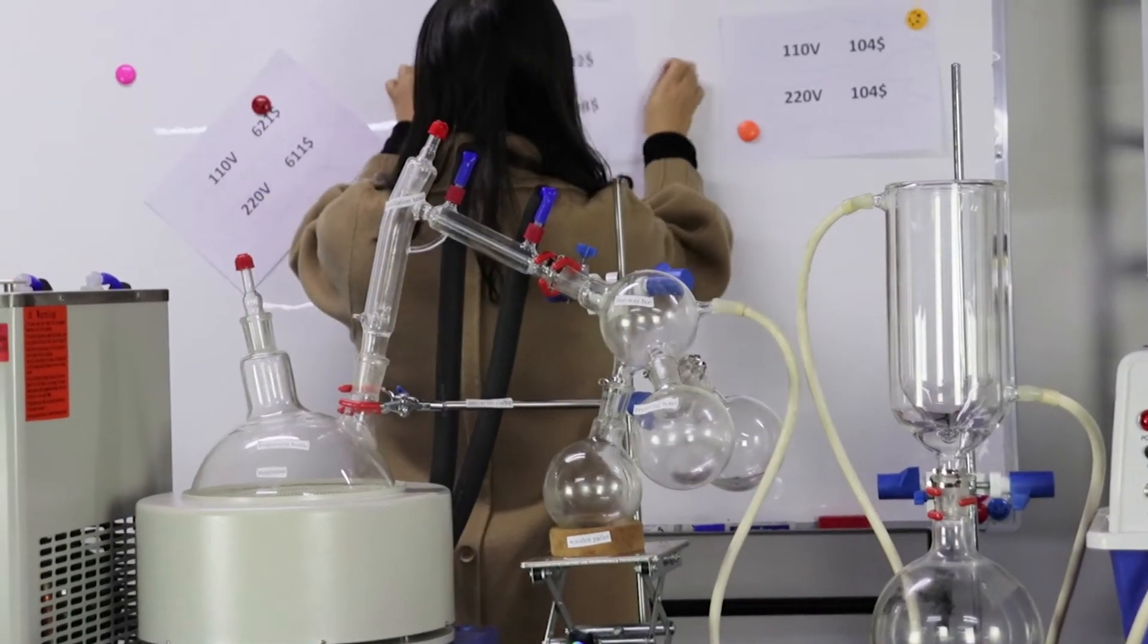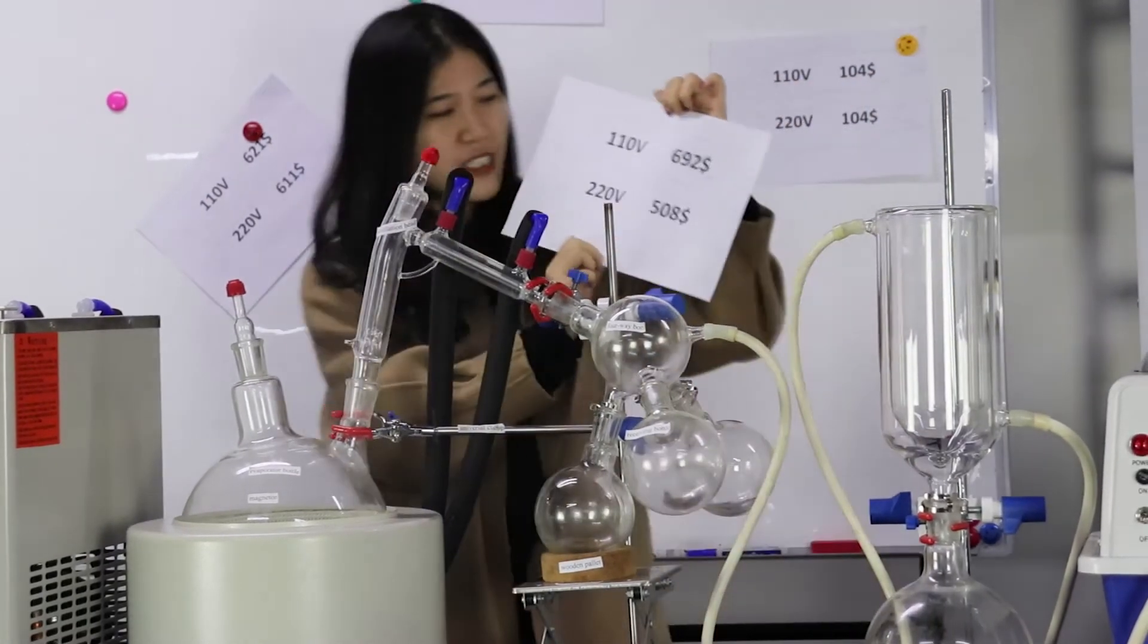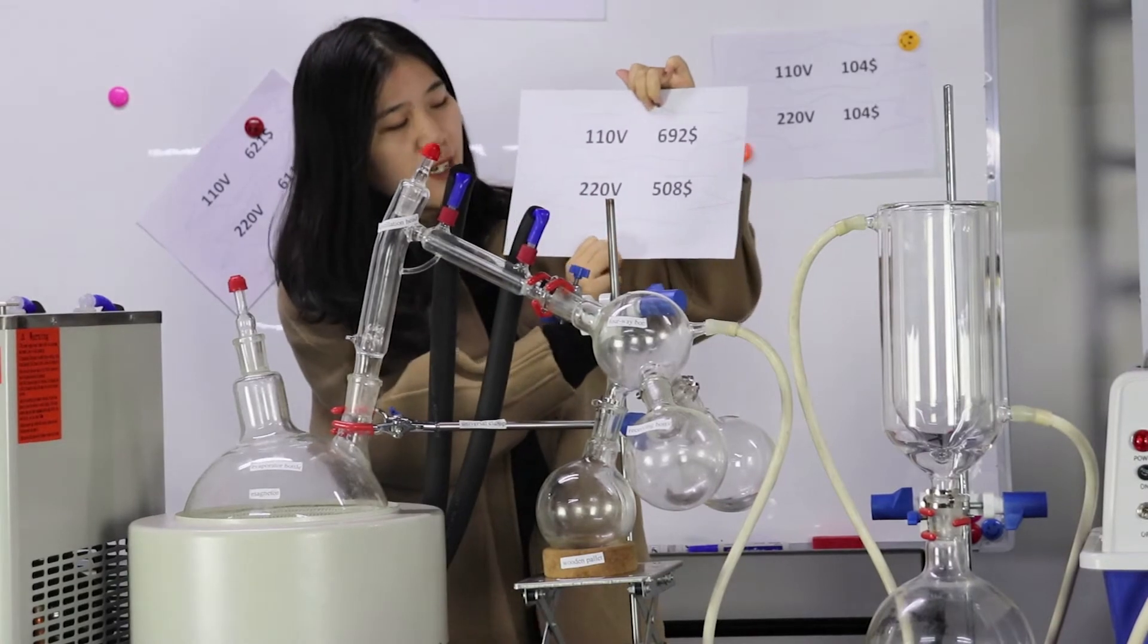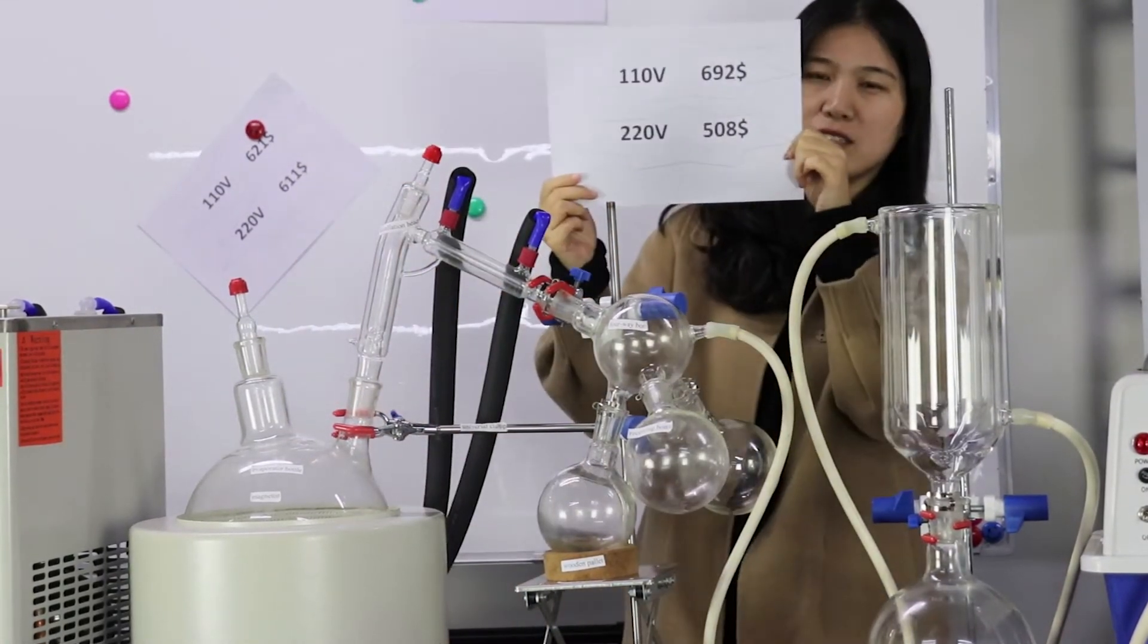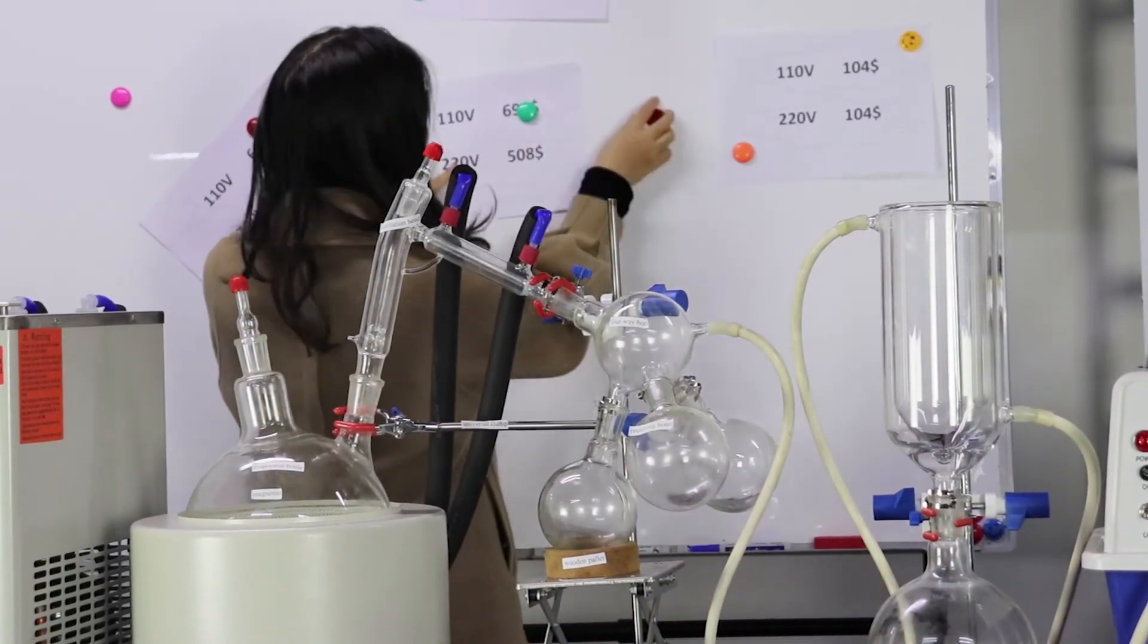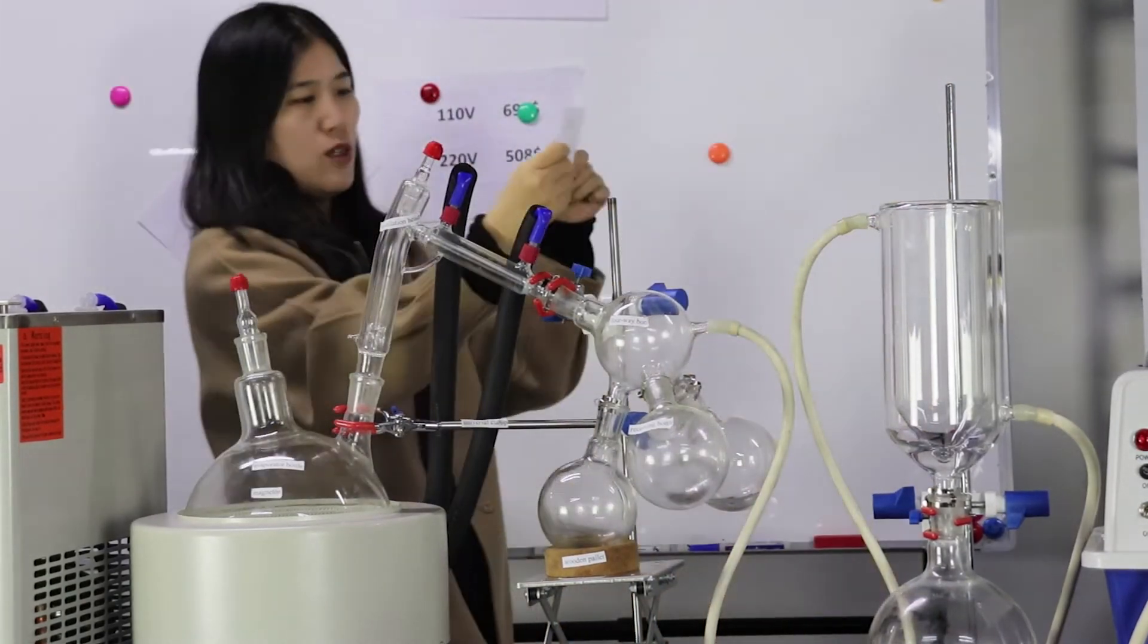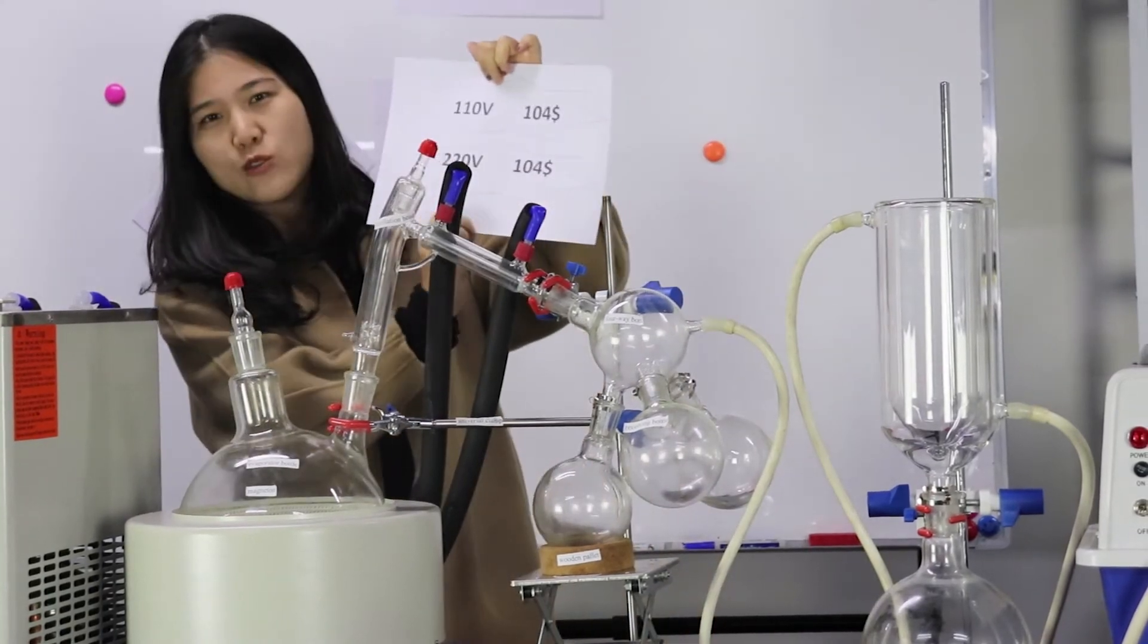Next, the chiller price. The chiller price is also very exciting. Just need $508. And last, the vacuum pump. Oh my god, just need about $100.